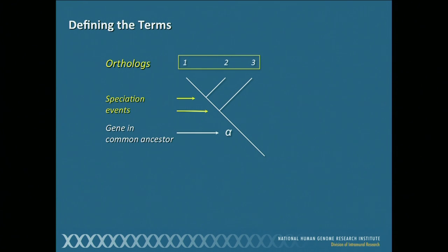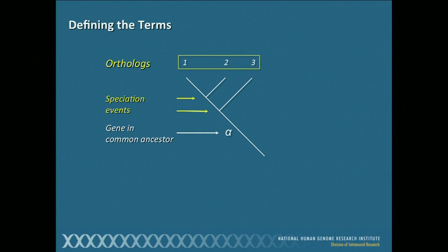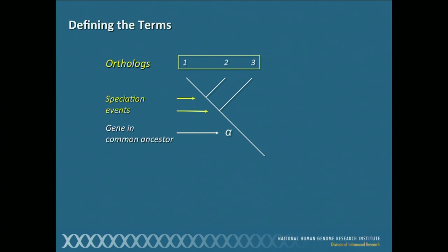Trying to put this all together in a diagram — let's start with gene A in some common ancestor. Over time, there were a series of speciation events that gave rise to three genes: one, two, and three. Since they're all direct descendants of gene alpha, genes one, two, and three are orthologs of one another.